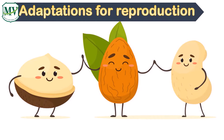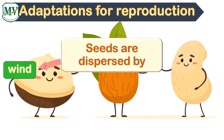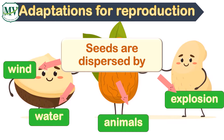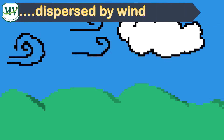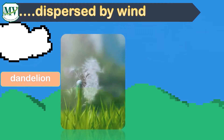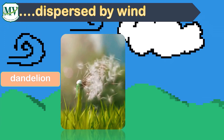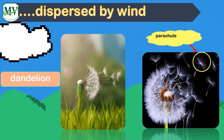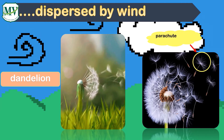Now lastly, we have adaptations for reproduction. It has four types of dispersing plant seeds: through wind, through water, through animals, or through explosion. First is wind. One example of a plant whose seeds are dispersed through wind is a dandelion. Each dandelion seed comes with its own individual feathery parachute to help it flow through the air. This works very well and only a slight wind will carry seeds high into the sky.